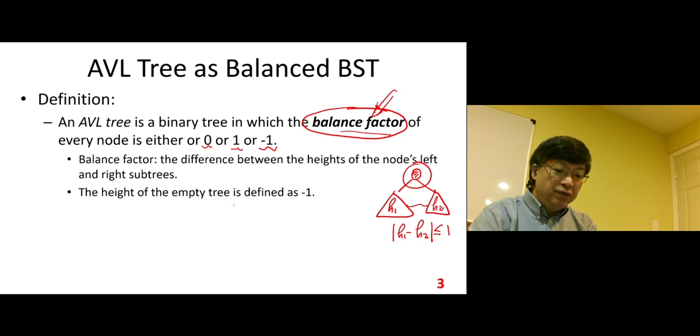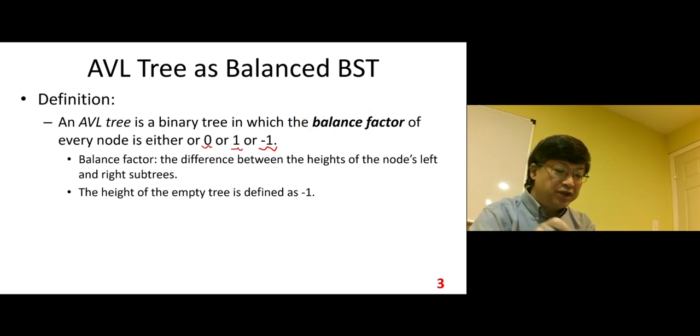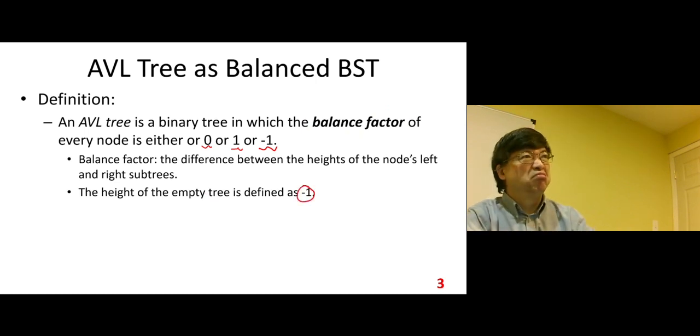The height of the empty tree is defined as negative 1, not 0. Why is that? This looks not quite intuitive. Because based on our intuition, it should be 0.